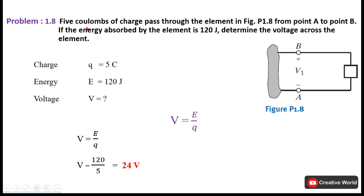Problem 1.8: Five coulombs of charge pass through an element from point A to point B. The energy absorbed by the element is 120 joules. Determine the voltage across the element. Charge and energy are given; using V = E / Q = 120 / 5, the voltage is 24 volts.